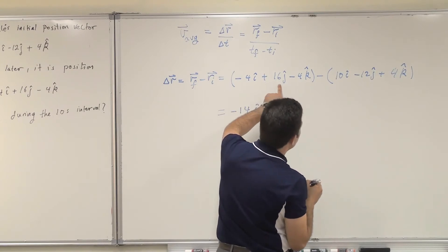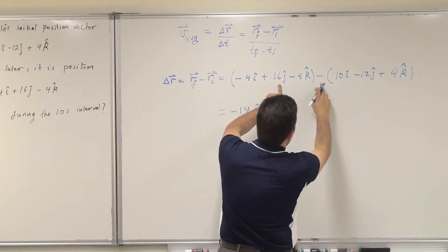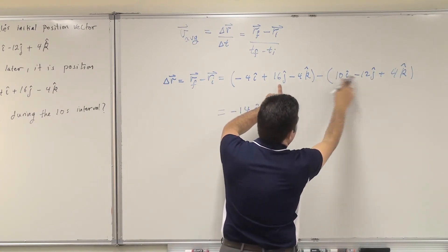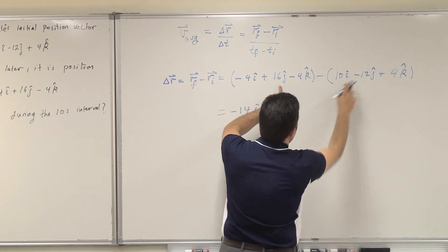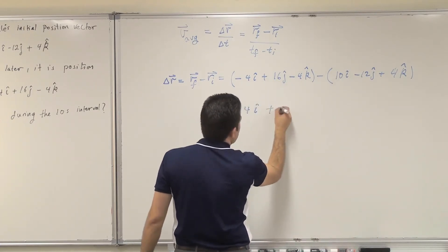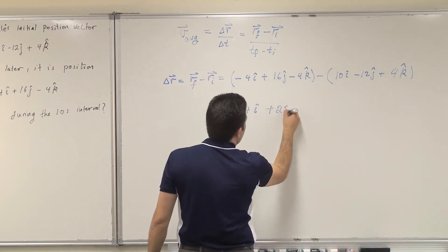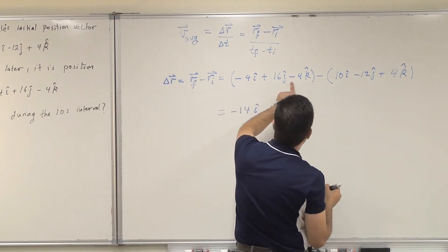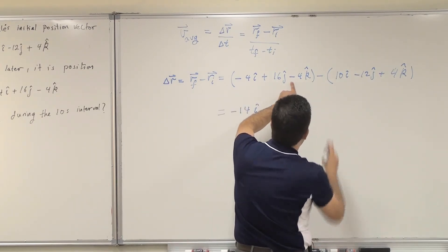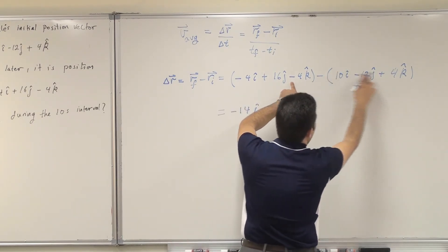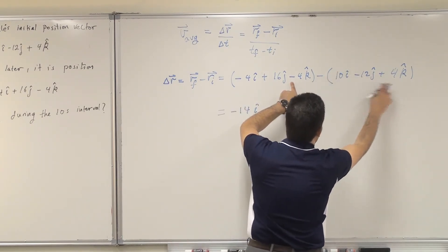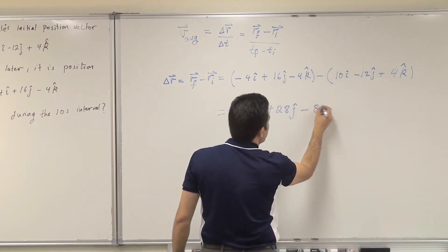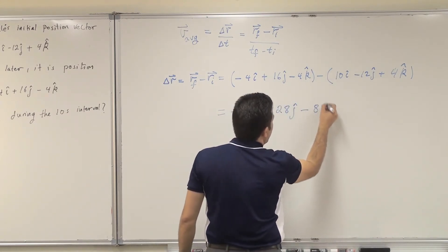And 16j-hat plus 12j-hat — because of the minus sign it becomes plus — so it will be plus 28j-hat. And minus 4k-hat minus 4k-hat, because of the minus sign, it's minus 8k-hat.